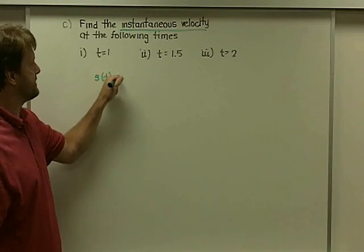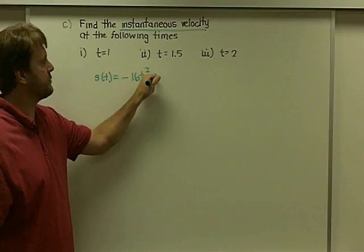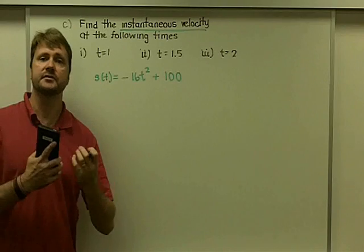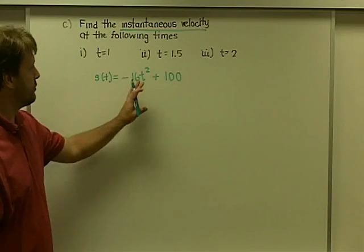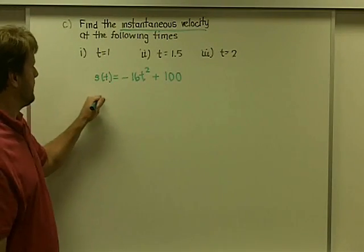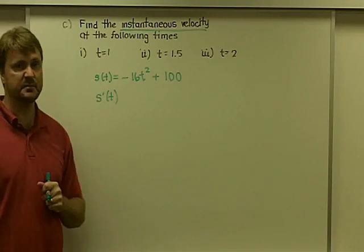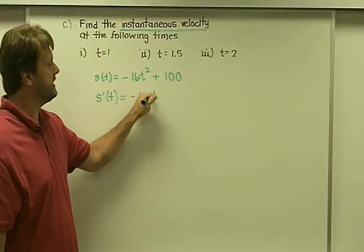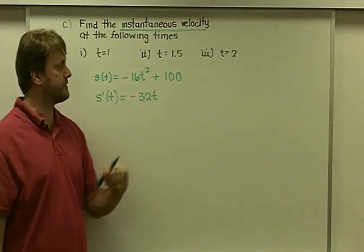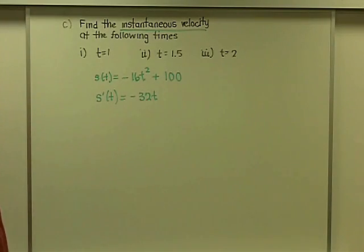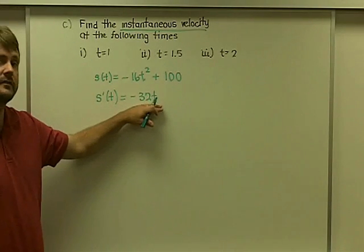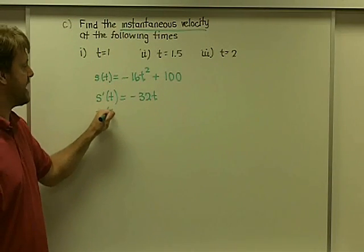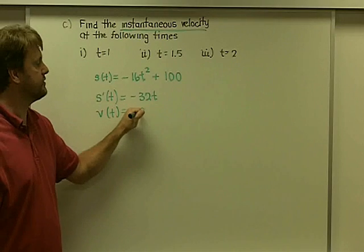that the position, S of T, was negative 16 T squared plus 100. The instantaneous velocity is associated with the derivative. So, you would want to take the derivative of this. And that S prime of T that you would have here would be negative 32 T plus the derivative of 100, of course, is going to be 0. So, this would be your derivative,